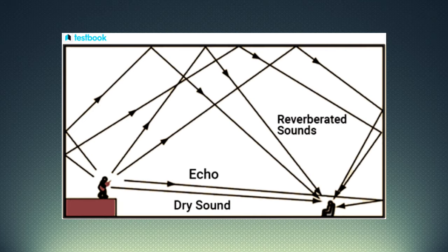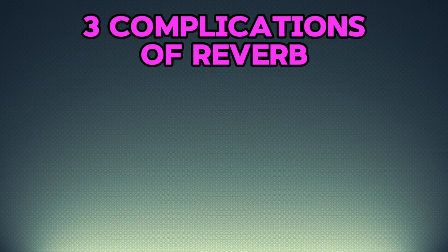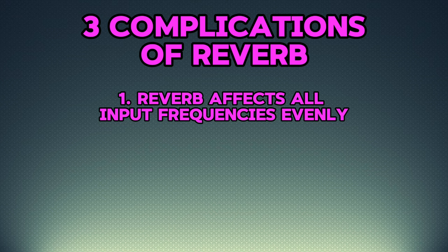Reverb at its heart is an emulation of what it sounds like to play a sound in a room. It mimics all the reflections and interactions that happen when a signal bounces off the walls and back to your ears, and this means that whatever signal you put into the reverb is going to affect what the reverb sounds like. There are three common complications we run into when using a reverb. Number one: reverb will affect all frequencies equally. If you put a track through an unfiltered reverb that has all the frequencies present, they will all come through that reverb. In the case of the top end in particular, this can make for a pretty harsh rain-on-a-tin-roof sound.